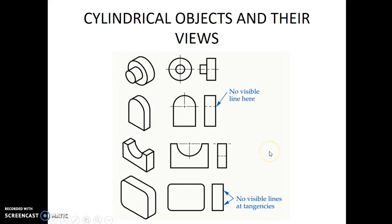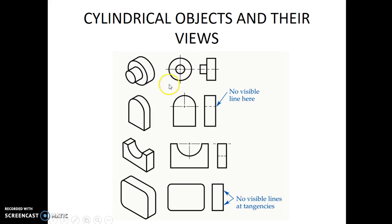Now let us see some characteristics of views taken of cylindrical objects. When we take orthographic projections of cylindrical objects, here we have an object having a larger cylindrical part merged with a smaller cylindrical part. If we take a view along the axis of the cylinder, we get a view showing the smaller circle representing the smaller cylindrical part and the larger circle representing the larger cylindrical part. When we take a view parallel to the axis of the cylinder, we get a rectangular view, showing two rectangular parts representing the smaller cylinder and the larger cylinder.